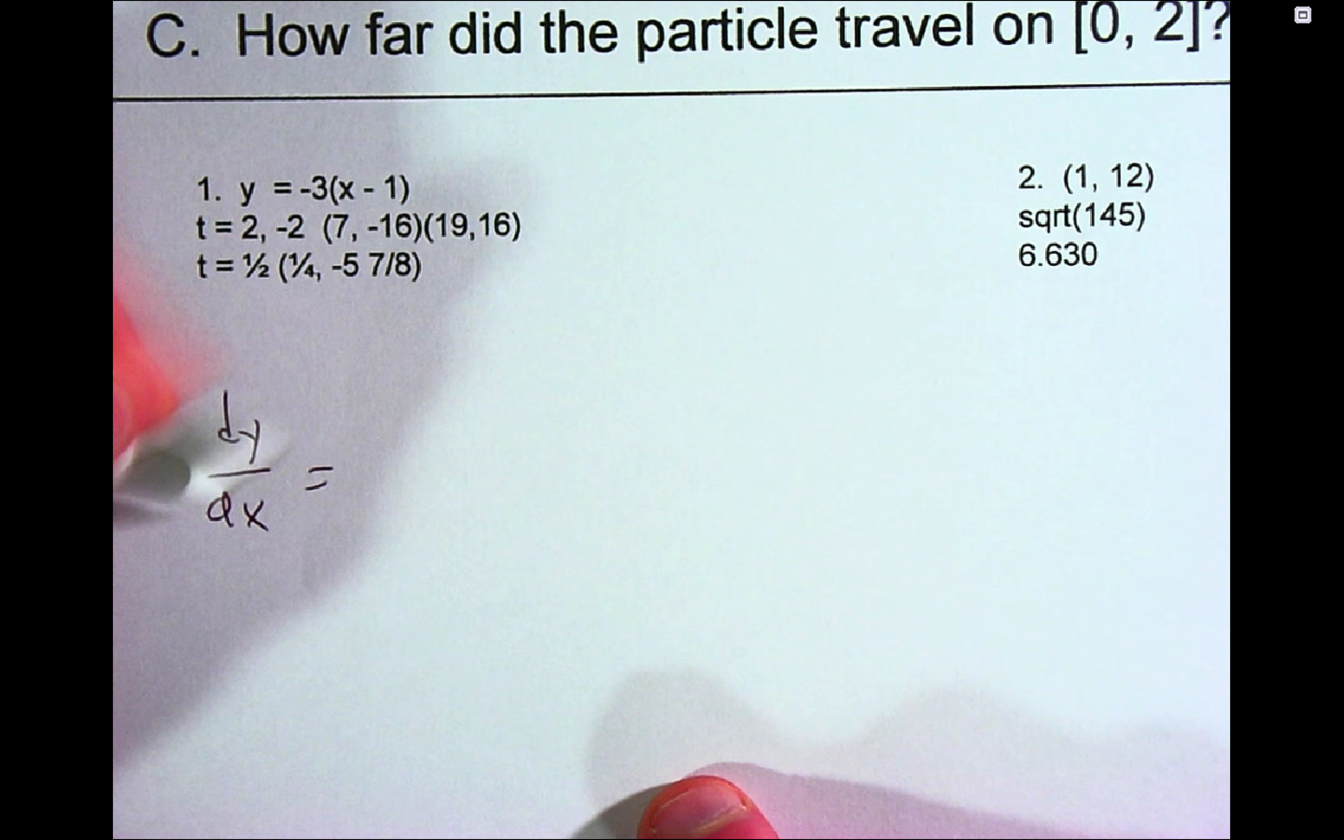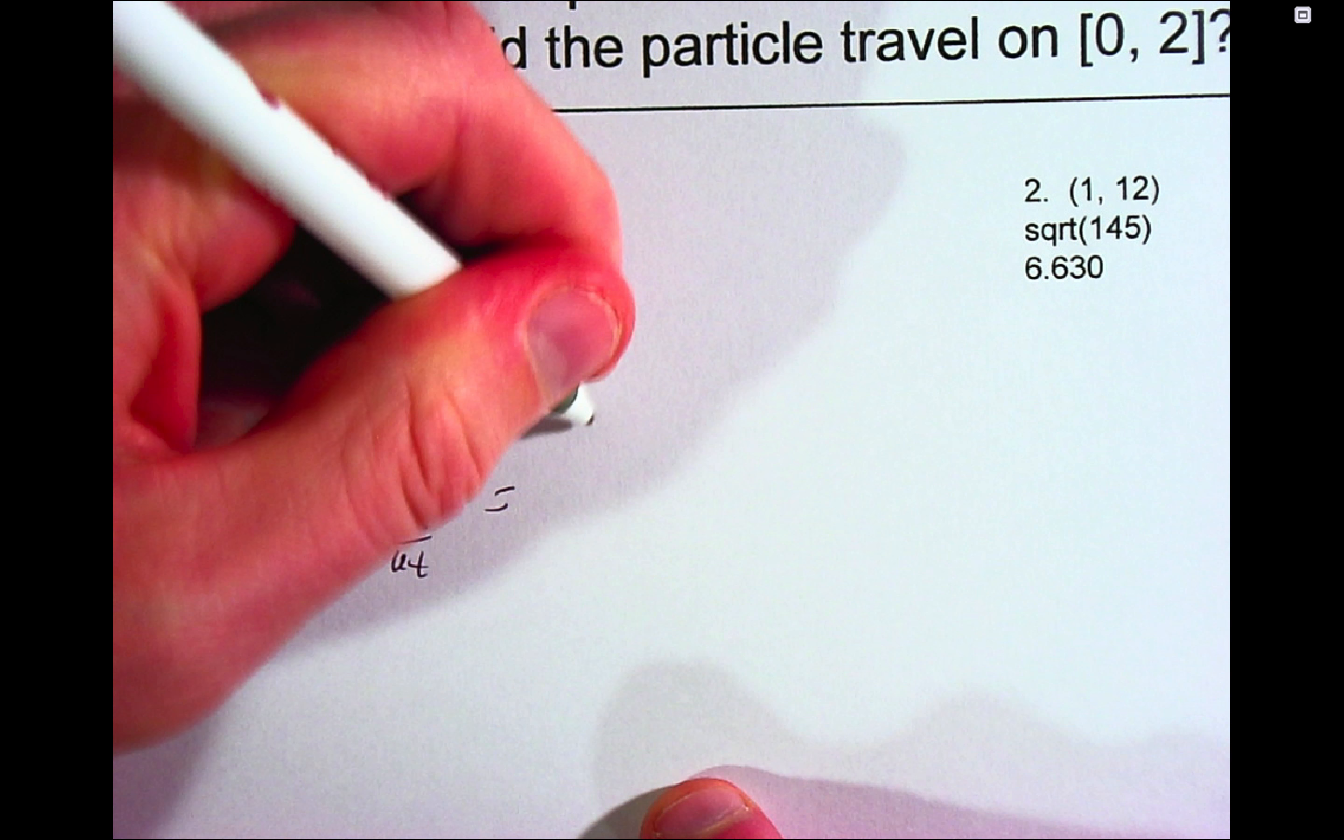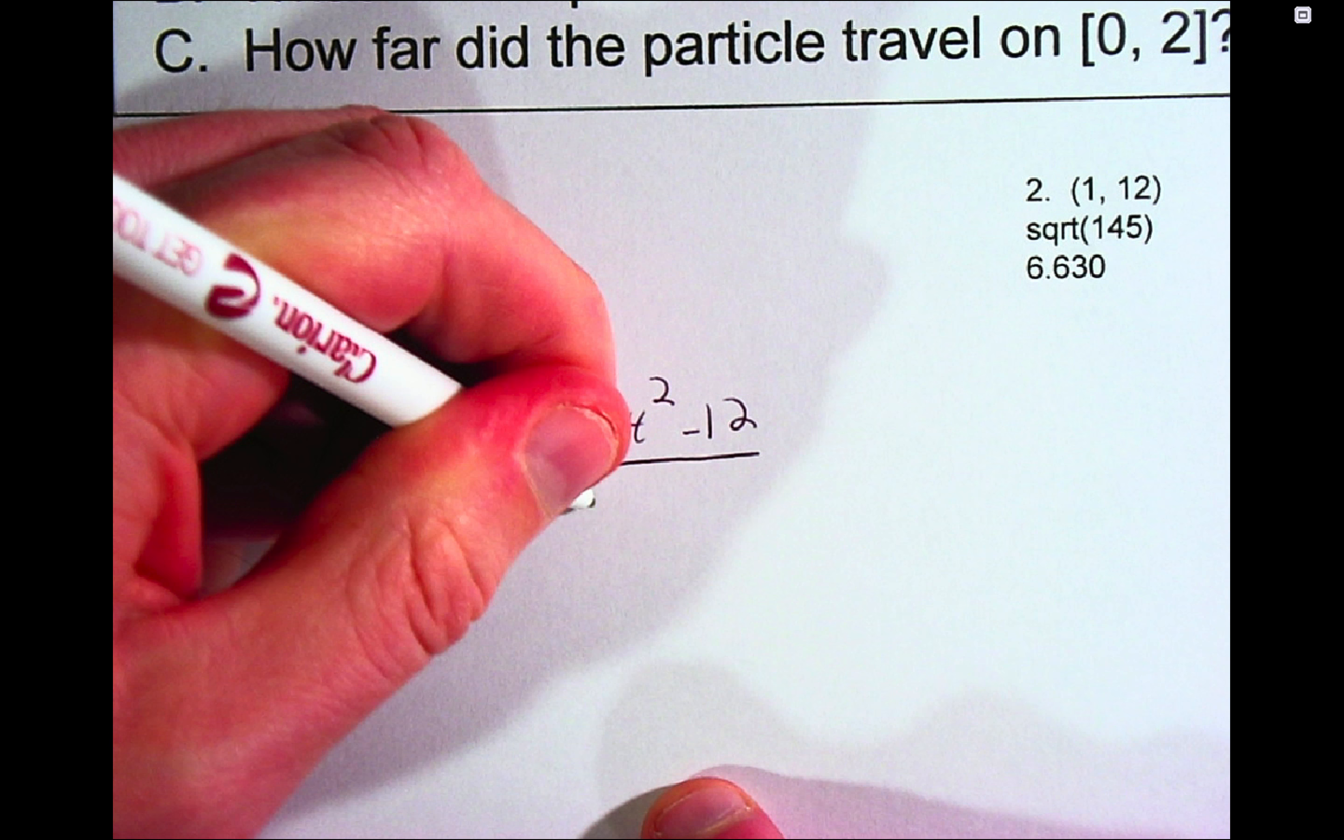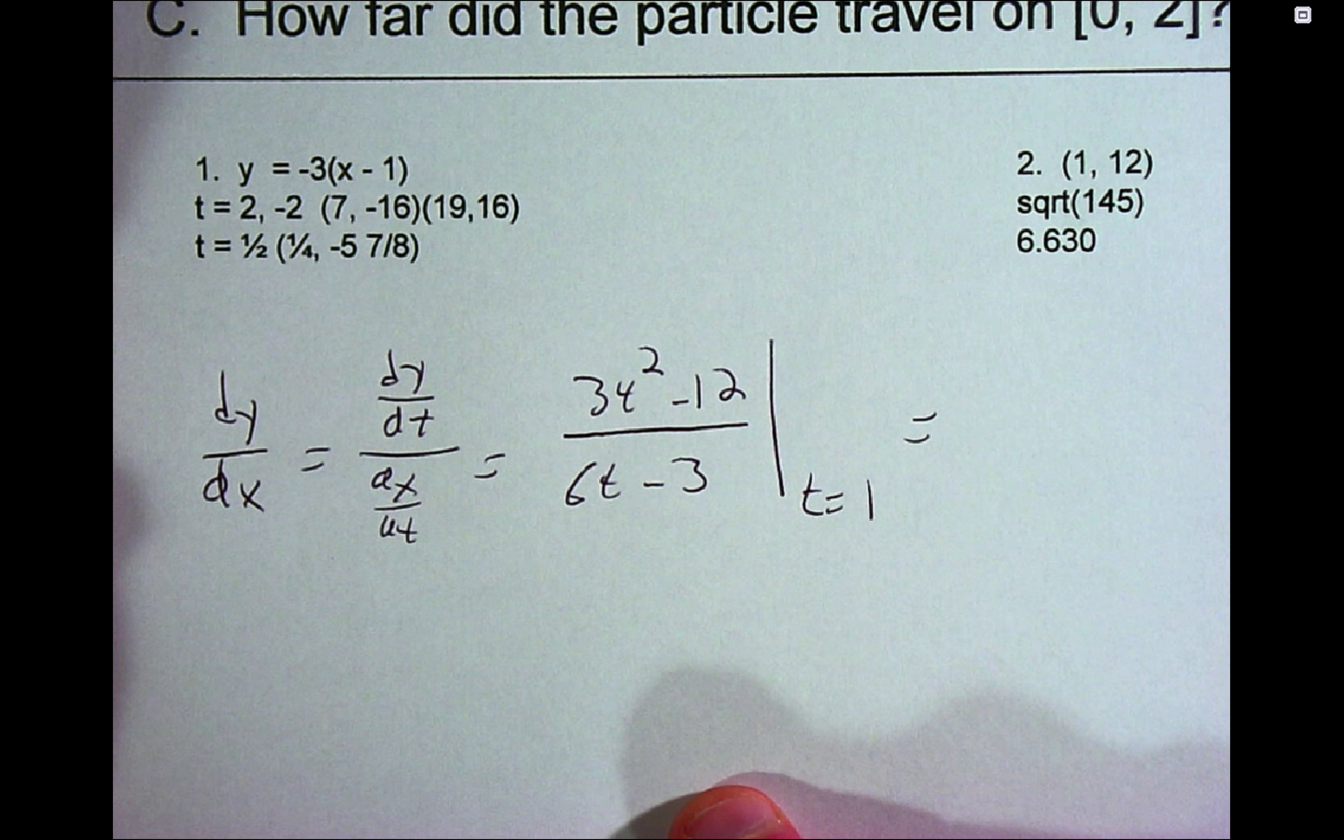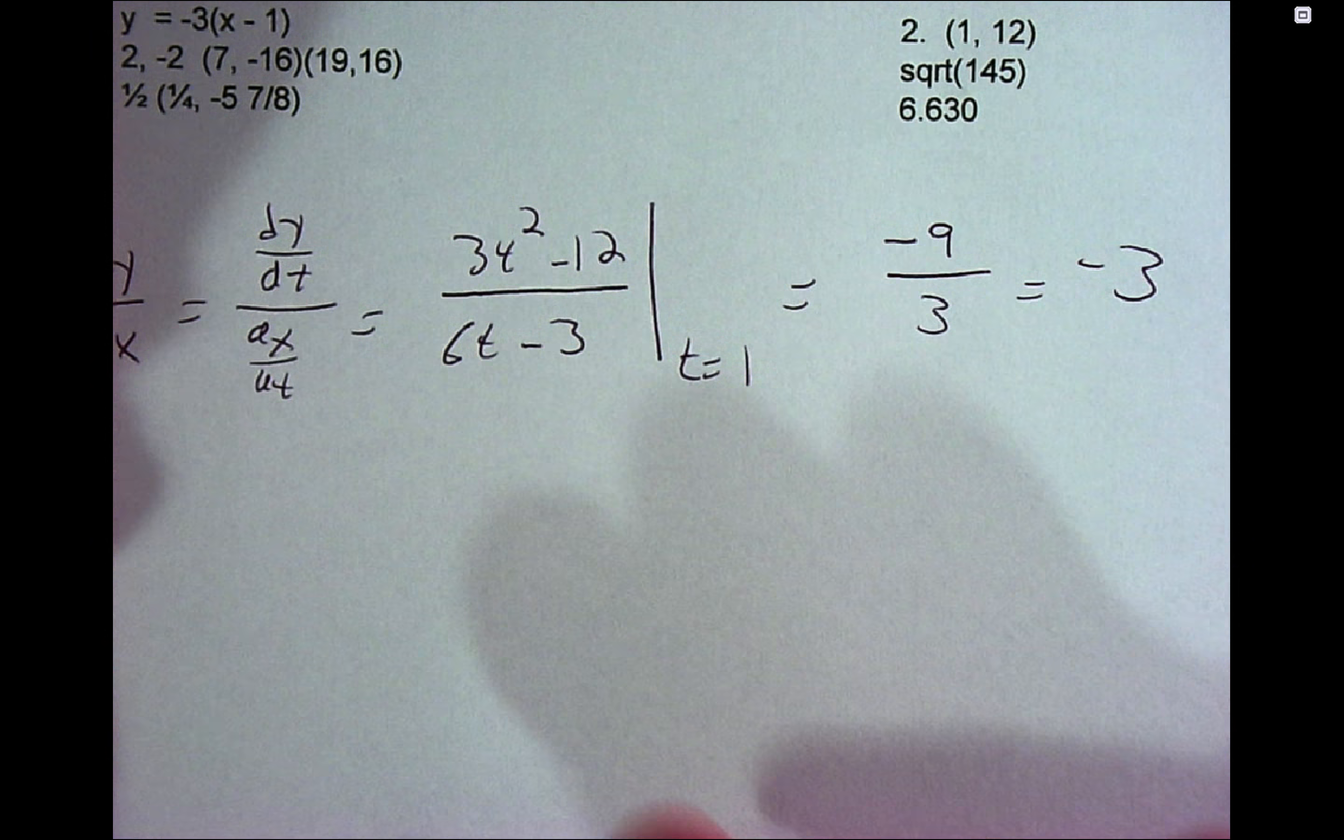You can have the questions up on your screen hopefully. dy/dx is dy/dt over dx/dt, and so just the power rule, 3t squared minus 12 for the dy/dt. dx/dt is 6t minus 3, and we're supposed to do this when t equals 1, so we can show that like that. And we plug in 1, and what do we get on top? Negative 9, on the bottom we get 3, so we get negative 3 for the slope.